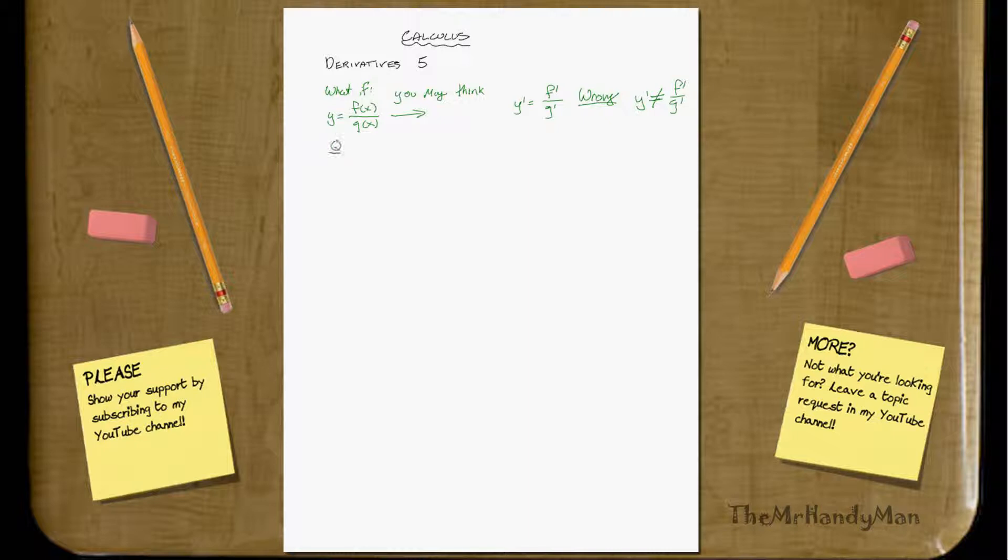So what we need to use is something called the quotient rule. And it's very similar to the product rule, and actually you can substitute a lot of quotient problems to use the product rule, just by switching, using a little bit of algebra techniques to simplify things.